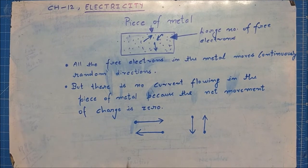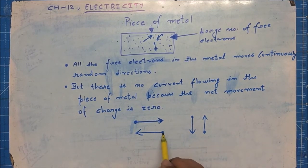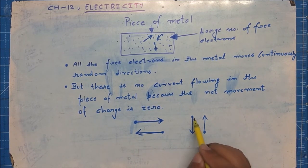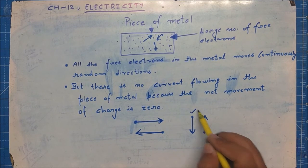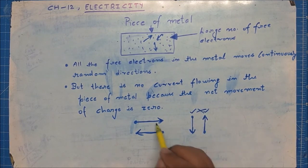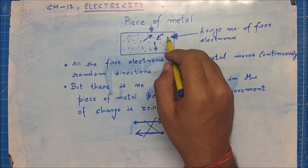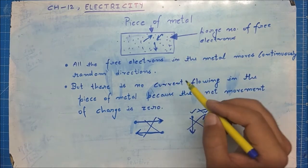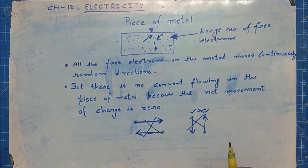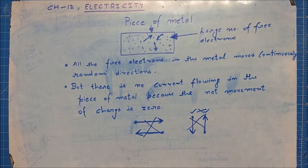This means if one electron is moving in this direction, there will be another electron moving in the opposite direction. If one electron moves downward, there will be another moving upward. So in the whole piece of metal, all the electron movements cancel each other out — therefore any piece of metal by itself has no net current flowing through it.